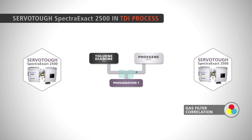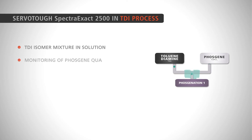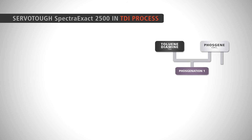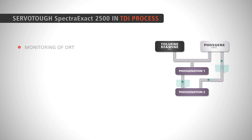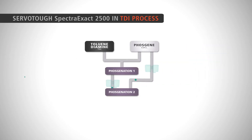This results in a TDI isomer mixture in solution, which then undergoes the phosgenation process. The Spectra Exact 2500 closely monitors phosgene quality and purity, as well as impurities including hydrogen chloride, carbon monoxide, and moisture. It also monitors the ortho-dichlorobenzene byproduct for water and isocyanate groups, which are liquid-phase measurements.